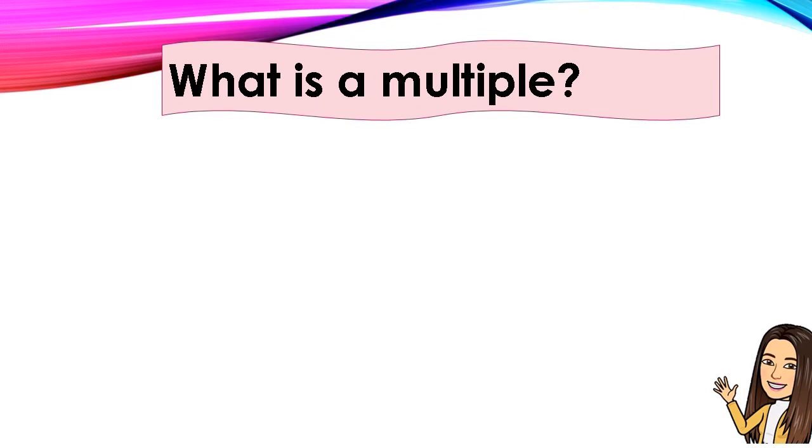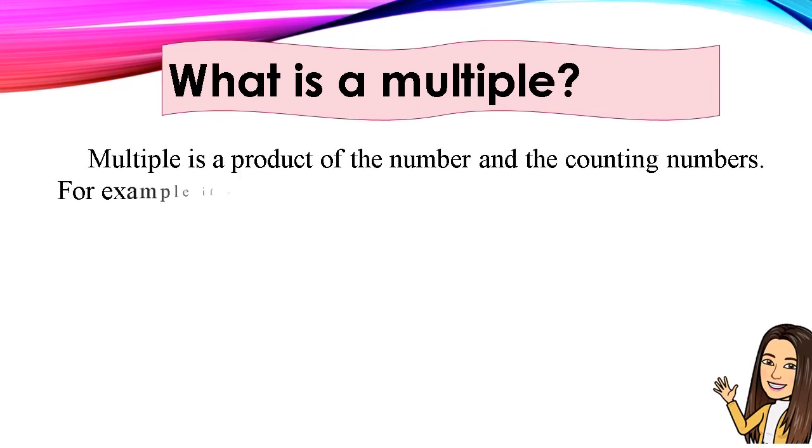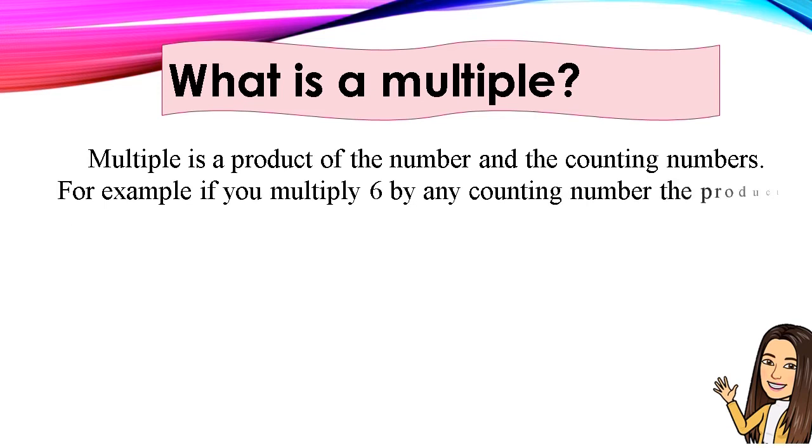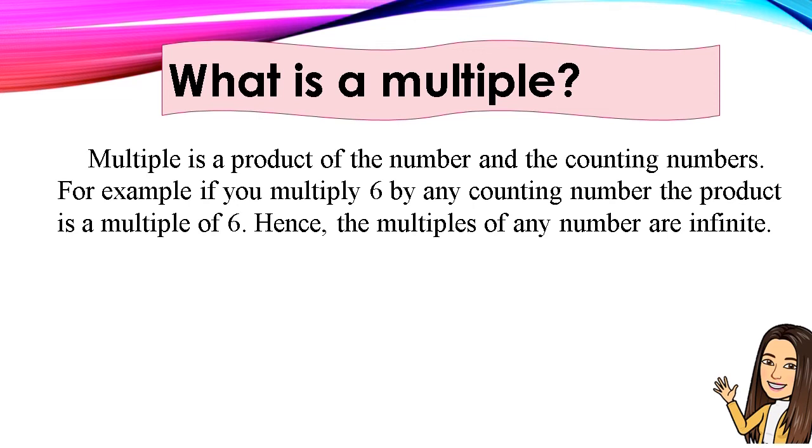What is a multiple? Multiple is a product of a number and a counting numbers. For example, if you multiply 6 by any counting number, the product is a multiple of 6. Hence, the multiples of any number are infinite.